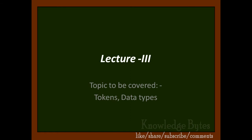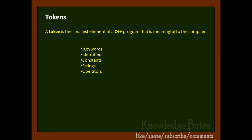What do you mean by tokens? A token is the smallest element of a C++ program that is meaningful to the compiler. When we write a program, the smallest individual words or symbols in which the compiler has a specific meaning are called tokens.